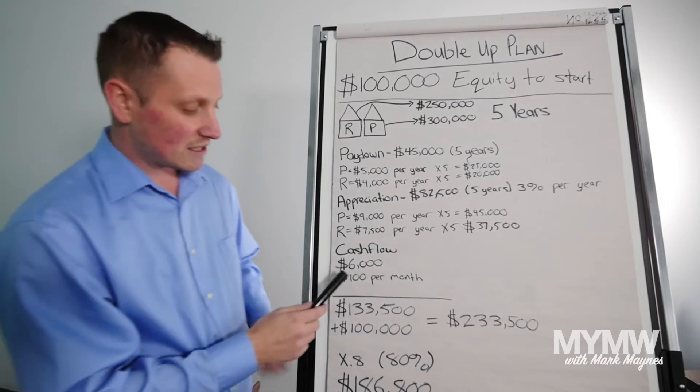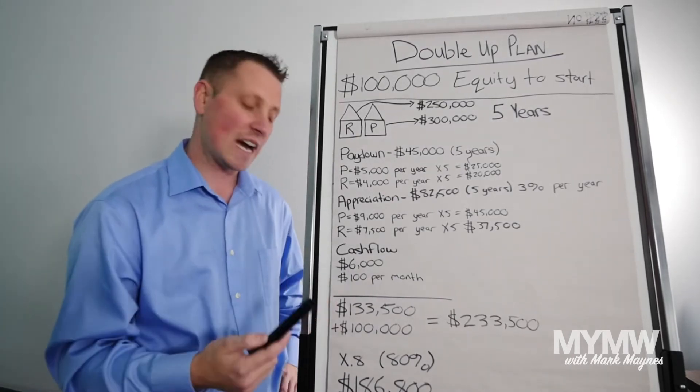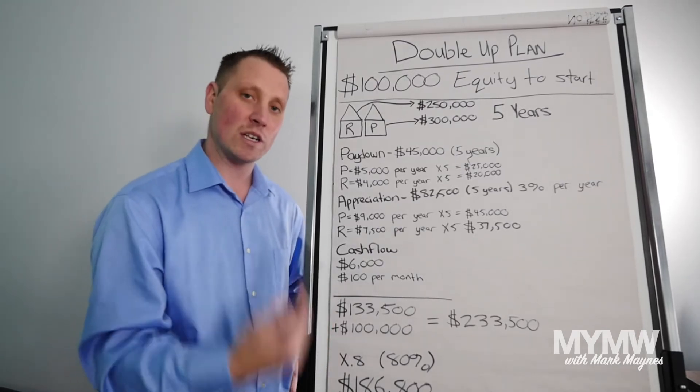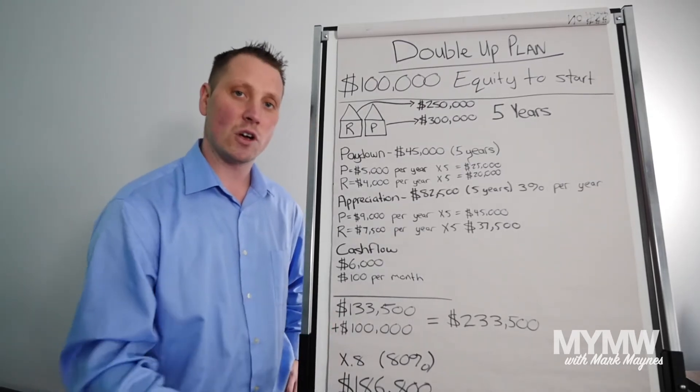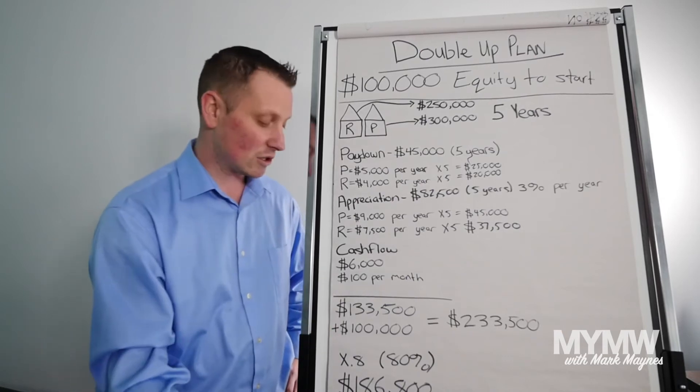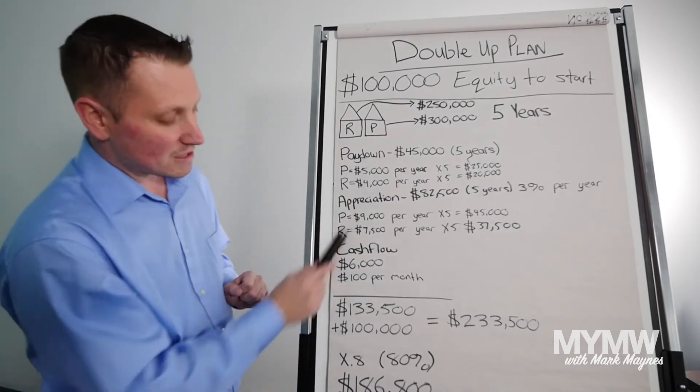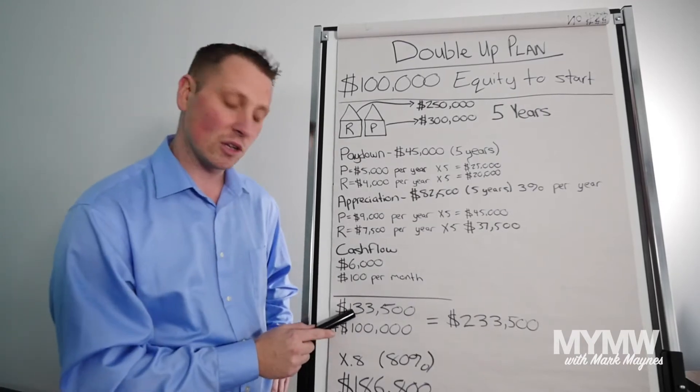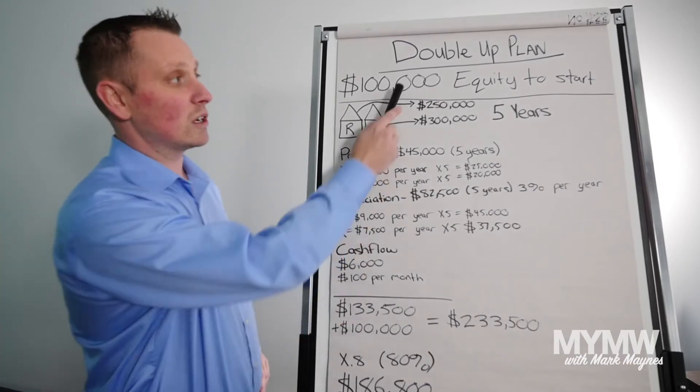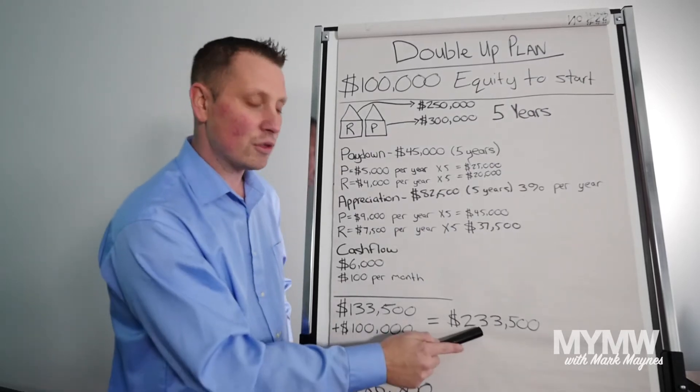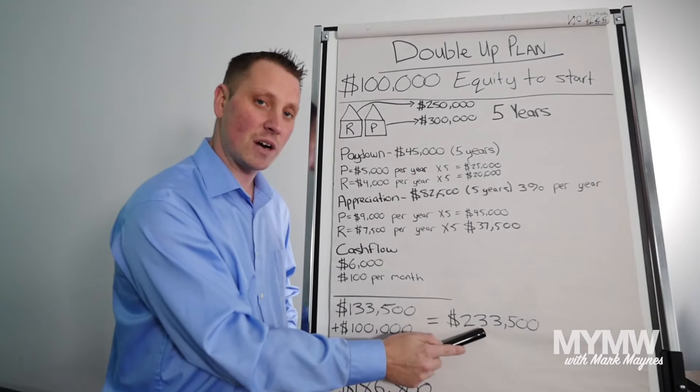Also, we're going to say you're making $6,000 in five years on cash flow. So you're making $100 per month on your rental property. That's $1,200. Five years, that's $6,000. So total, these numbers add up to $133,000 plus your initial $100,000 you came in with. You've turned your $100,000 to $233,500 in five years.